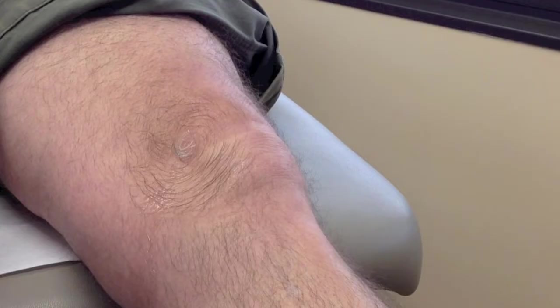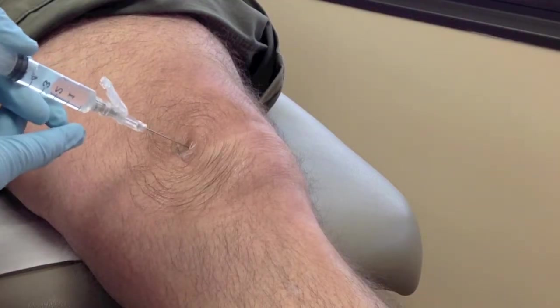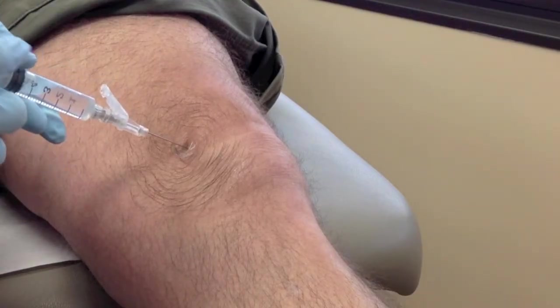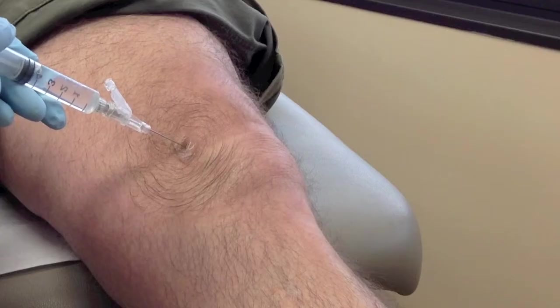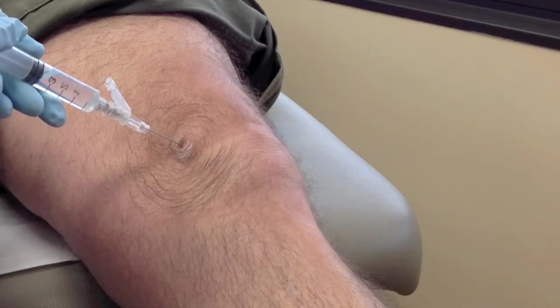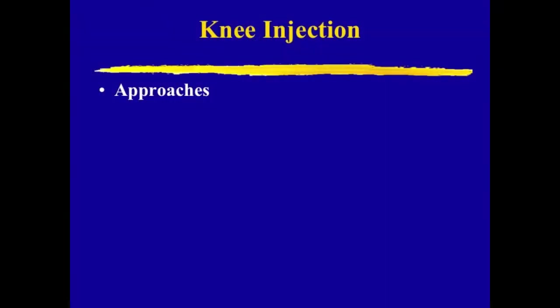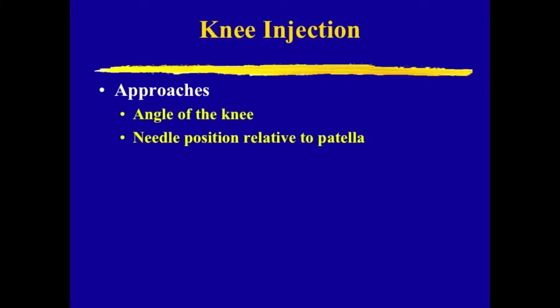In Part 3, we will discuss the aspiration and injection techniques for each of the anatomical approaches. There are a number of anatomical approaches for injecting the knee. Knowing the pros and cons of each option can help you make a more informed choice of approach for your patient. When you are choosing an approach for a knee injection, you essentially have two variables: the angle of the patient's knee and the needle position relative to the patella.